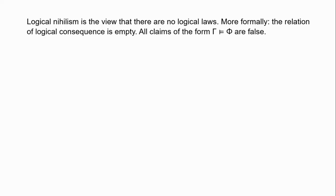To put this in more formal terms, the relation of logical consequence is empty. All claims of the form gamma entails phi — where gamma is some set of premises and phi a conclusion — are false. There is no pairing of premises and conclusion such that the conclusion is a logical consequence of the premises, such that the premises logically entail the conclusion.